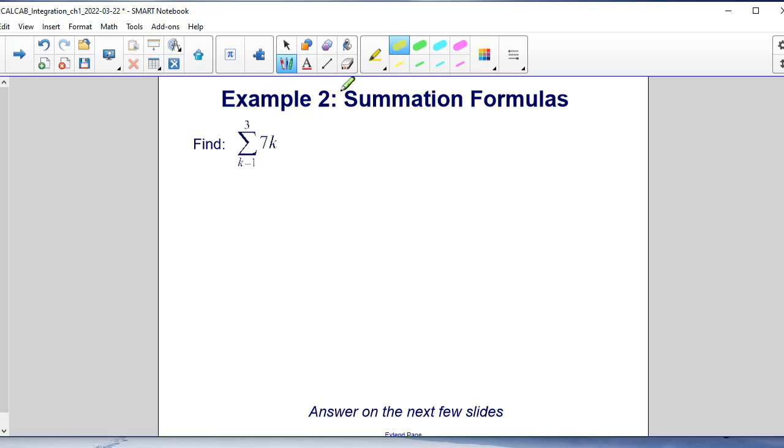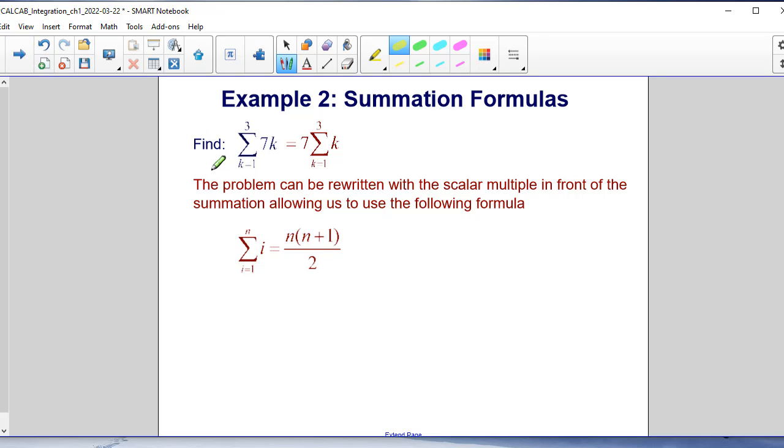Example number 2 of summation formulas: find the sum of 7k as k increments from 1 to 3. First of all, we're going to rewrite the problem by moving the 7 outside the sum and we're just going to find the sum of k from 1 to 3. So note that this problem can be rewritten with the scalar multiple, which is 7, in front of the summation, allowing us to use this following formula.